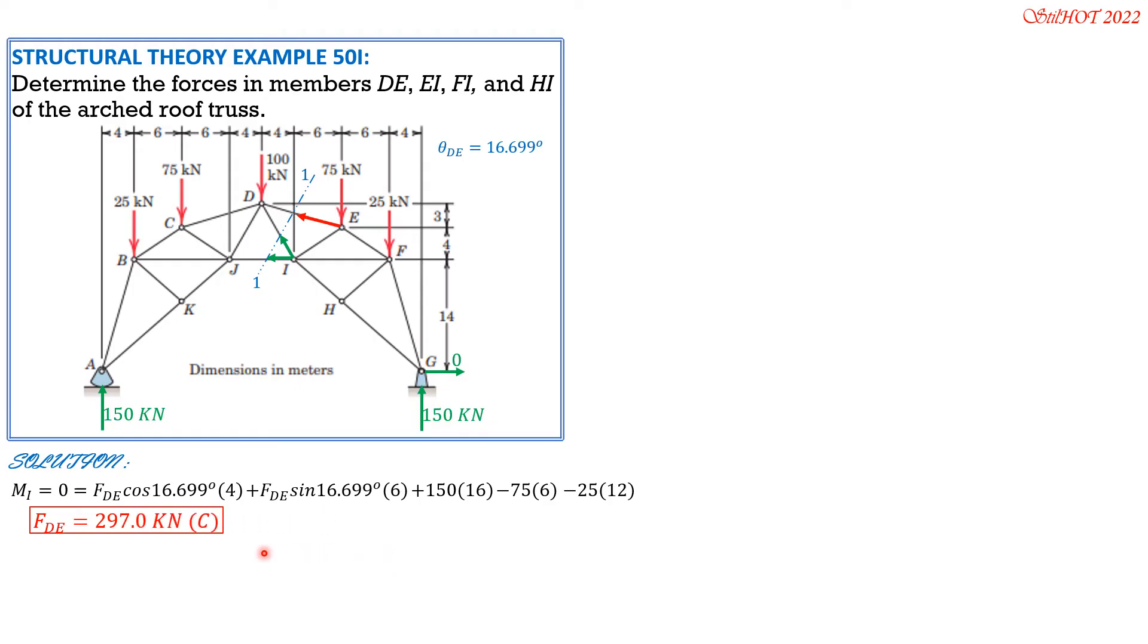From there we can now solve FDE using your calculator. It is negative, so it is compression: 297.0 kN compression.